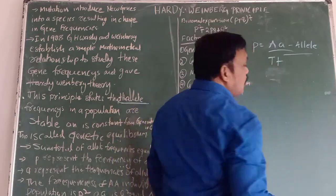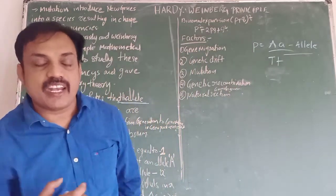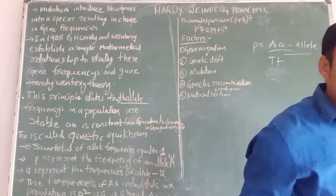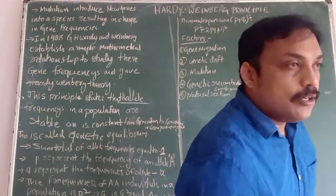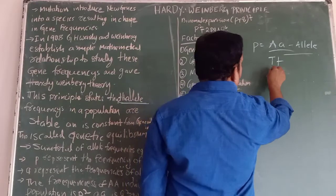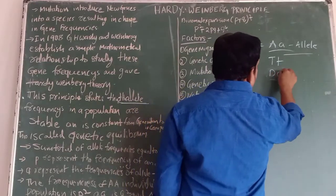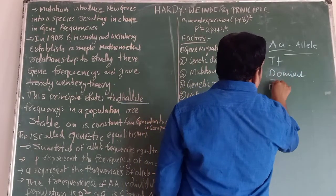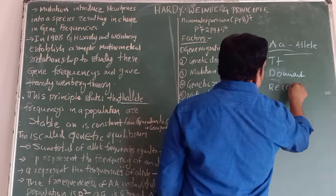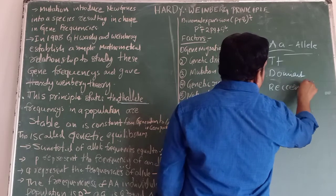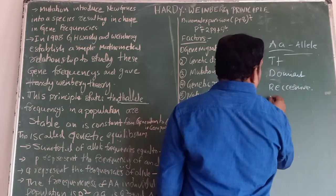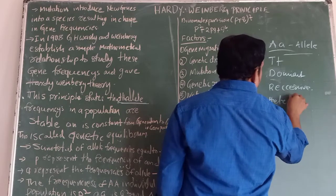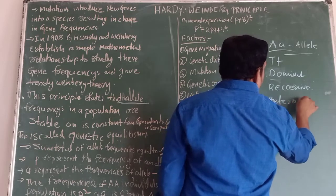Allele means the cause of a trait or character. In alleles, one is a dominant character and the other is a recessive character. There are also heterozygous forms — that means capital A and small a together.